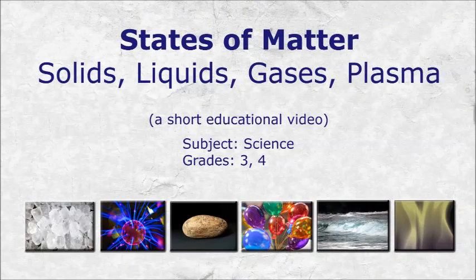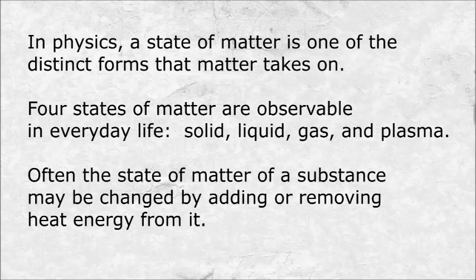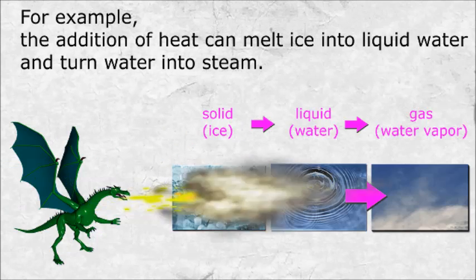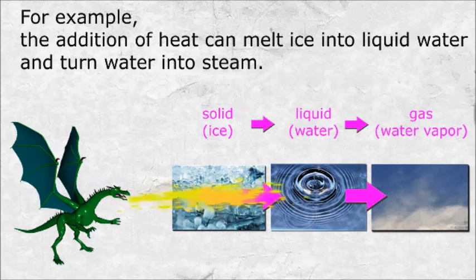States of Matter: Solids, Liquids, Gases, and Plasma. In physics, a state of matter is one of the distinct forms that matter takes on. Four states of matter are observable in everyday life: solid, liquid, gas, and plasma. Often the state of matter of a substance may be changed by adding or removing heat energy from it. For example, the addition of heat can melt ice into liquid water and turn water into steam.